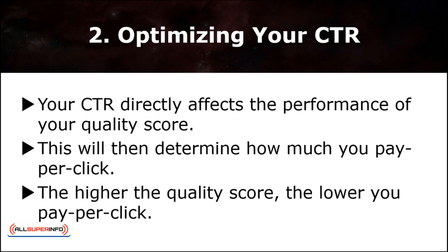Second, optimize your click-through rate, or CTR. Your CTR directly affects the performance of your quality score, which is the relevance of your campaign, and this will determine how much you pay per click. The higher the quality score, the lower you pay per click. Therefore, to optimize your CTR, test run different AdWords campaigns to see which version gets the most clicks.